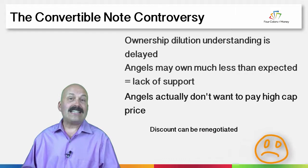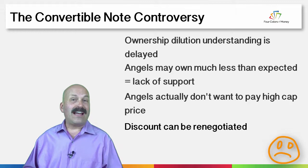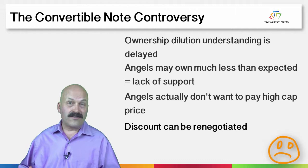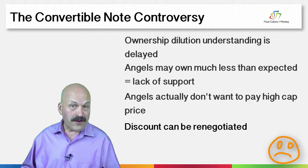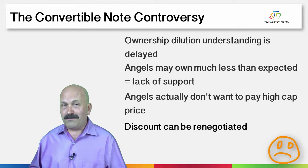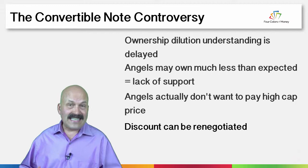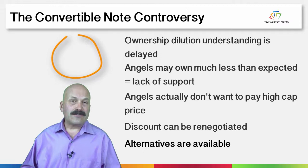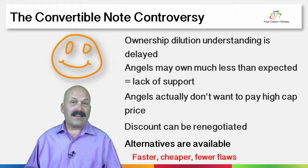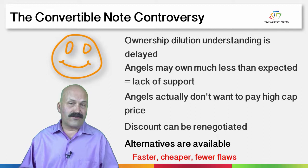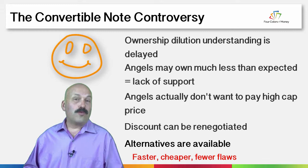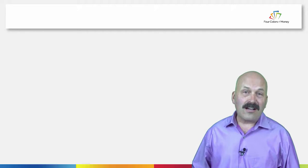Finally, the discount built into convertible notes can be negotiated away by a VC that's negotiating hard if they are the only alternative around, which again means seed investors end up owning less than they thought. One final point the VCs who don't like convertibles make is that today there are alternatives — particularly series seed term sheets — which are faster and cheaper than full-blown preferred shares, and don't have the flaws of convertible notes while addressing most of the issues that convertible notes were originally designed to solve.